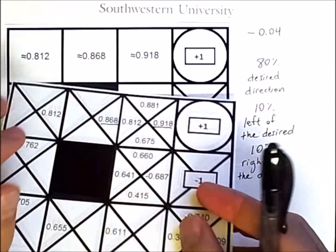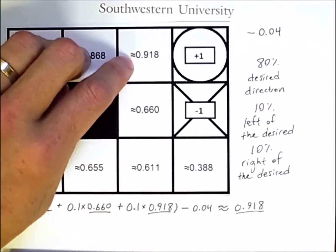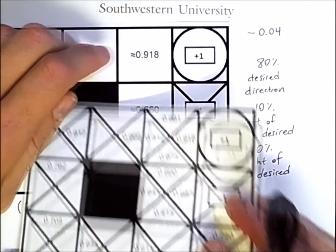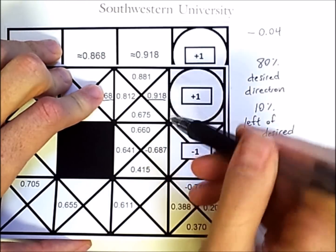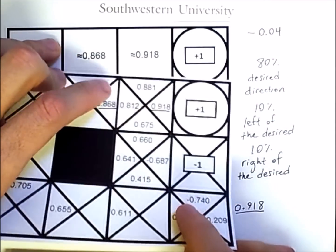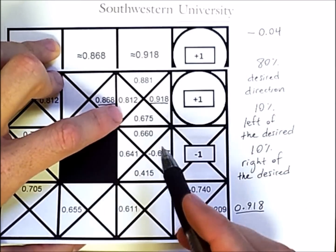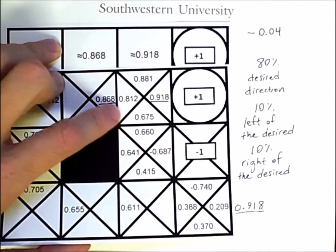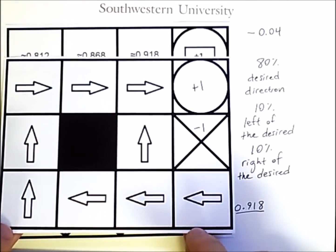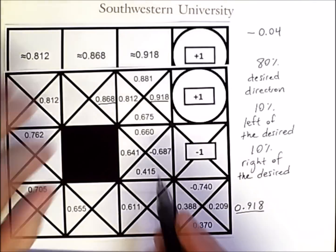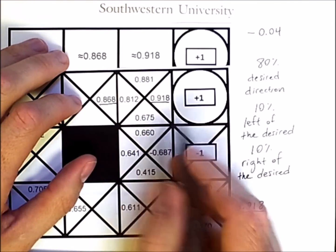Well, it means that if we're in this state, and rather than picking the optimal action of moving right, we choose to move down, that action, followed by using this policy, has a value of 0.675.